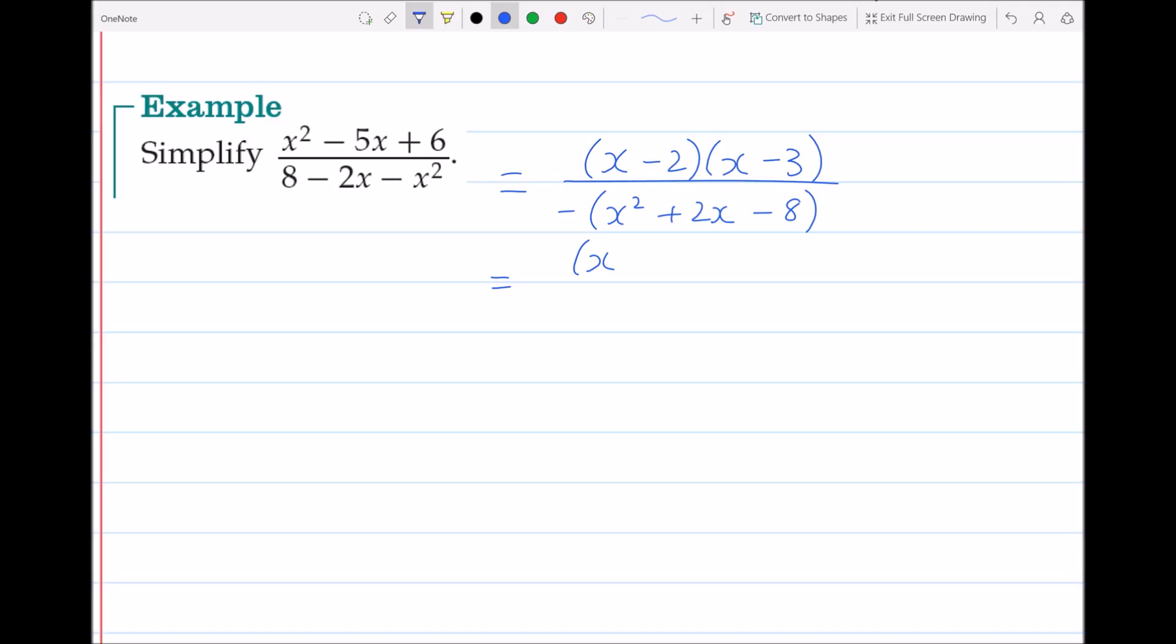In the next step, I'll keep the top the same and factorize the bottom into two sets of brackets. We'll have x, and to get this one to work we're going to have plus 4 and minus 2.